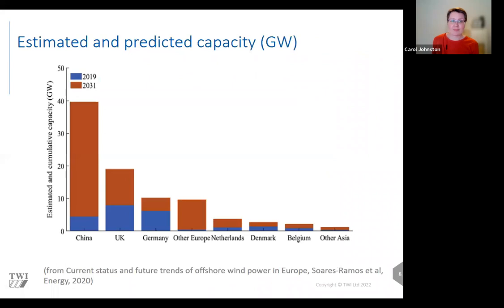Even with the current rapid growth of the industry, governments worldwide have pledged to generate even larger amounts of energy from wind. This plot shows that by 2031, China is estimated to have almost 40 gigawatts of total installed capacity. So in just 10 years' time, China's installed wind capacity may exceed the total amount of wind capacity currently installed worldwide. The challenge of meeting these targets is immense.